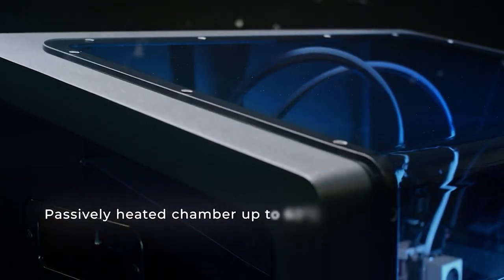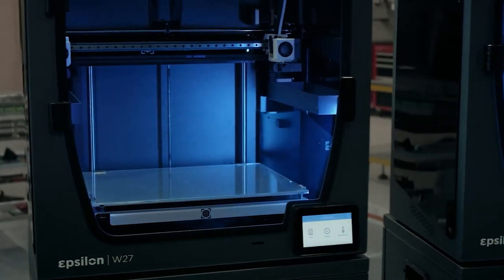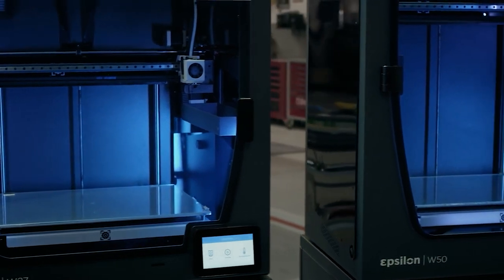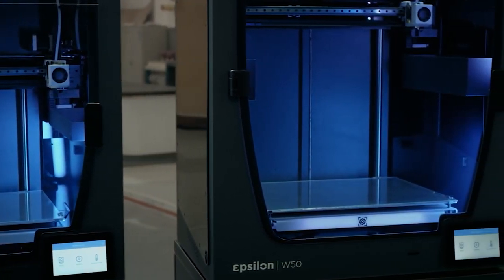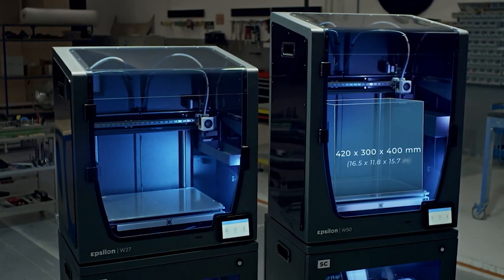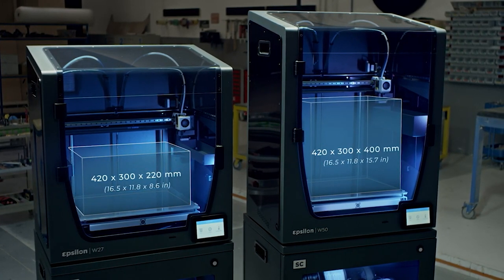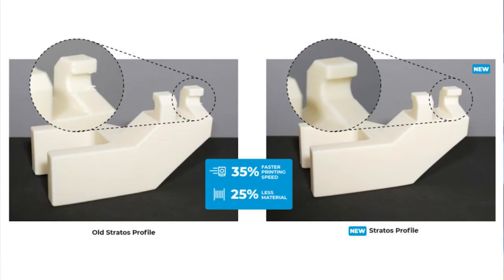The Epsilon line of 3D printers from BCN3D is the perfect way to achieve great results when printing with ABS. The enclosed printing chamber on both the Epsilon W50 and W27 can maintain an ambient printing temperature of around 60 degrees, meaning that the risk of warping when producing large ABS components is massively reduced. The 50-litre build volume on the W50 together with BCN3D's signature IDEX technology provides the most efficient way to produce large ABS 3D printed parts. In a recent update to our slicing software Stratos, ABS now prints even better — faster, using less material and achieving an even better surface finish with the standard ABS profile.